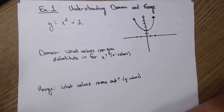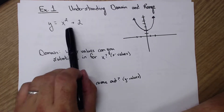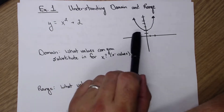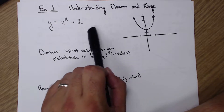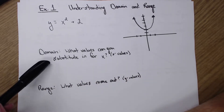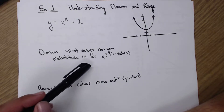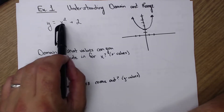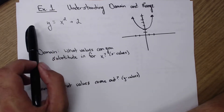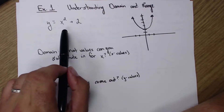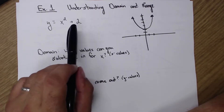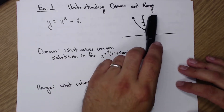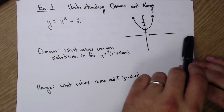A lot of this should be review from your Algebra 1 class. We have y equals x squared plus 2. That graph looks like this — it's a regular parabola because it's x squared, but it's shifted up 2 because of the plus 2. We're curious what the domain is, so what values can you substitute in for x? In this case, that's all real numbers. We can plug whatever number we want into x — negative, positive, or 0. These arrows keep going left and right, so eventually we hit all x values in both directions.